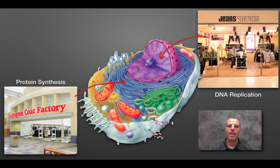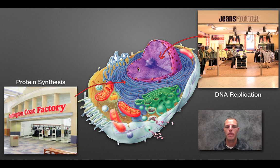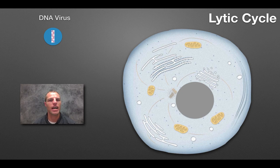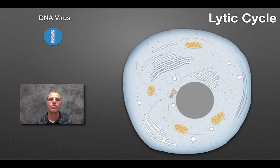The virus wants to attach to the cell, invade, drop off its genetic material, hijack those two processes to make new viral genes and new protein coats, reassemble them, and then destroy the cell in the process. The first cycle we'll look at is called the lytic cycle. It comes from the word lysis, which means to break open. At the end of this cycle, the cell is going to burst, release new virus, and die in the process.